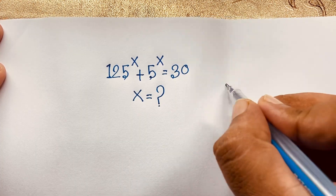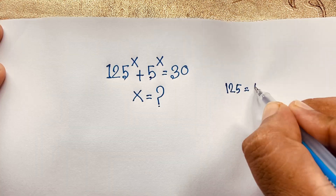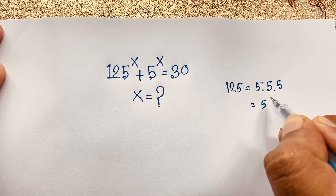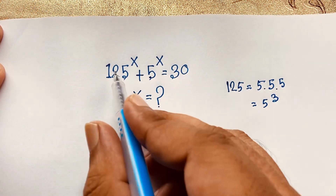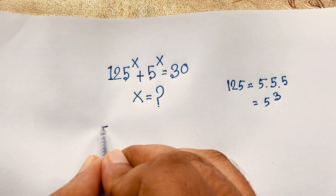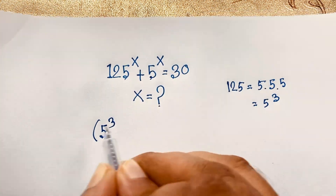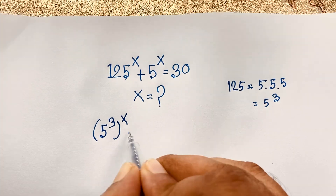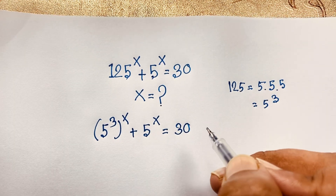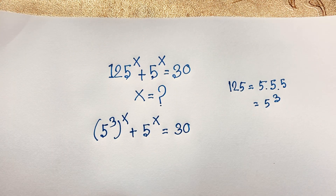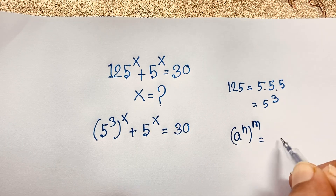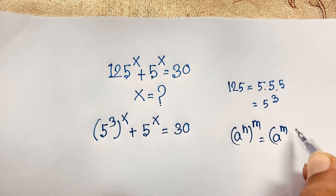We know that 125, which is 5 times 5 times 5, meaning 5 to the power 3. So I take this 125 to the power x — it will be 5 to the power 3, bracket, to the power x, plus 5 to the power x is equal to 30. Then, according to the exponential formula, we know that a to the power n, whole to the power m, equals a to the power m, whole to the power n.